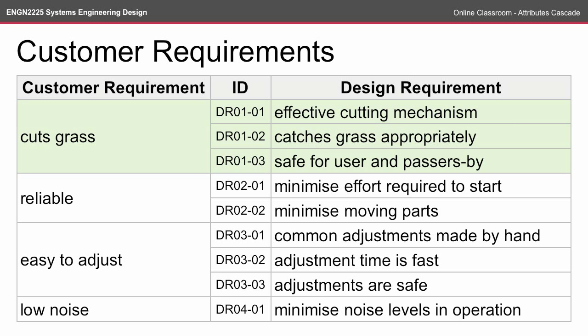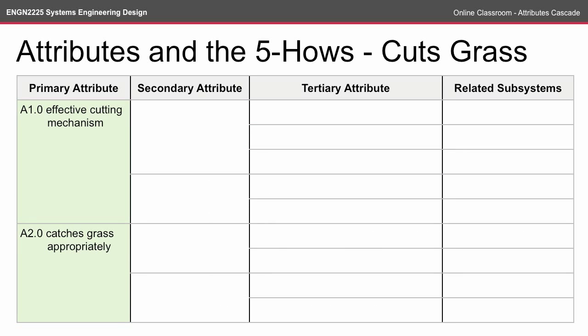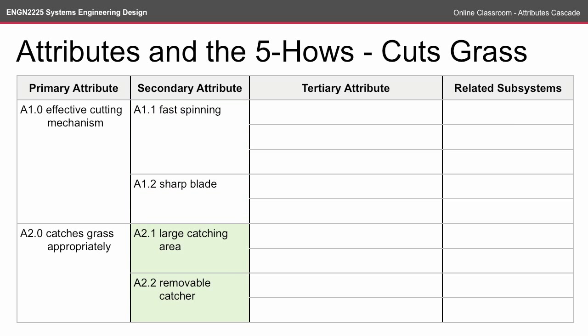For each of the design requirements we're going to break them down into secondary and tertiary attributes. Here we see the first two: effective cutting mechanism and catches grass appropriately. The primary attributes are taken directly from the design requirements, and some of the language might need to be changed slightly. To establish the secondary attribute, ask how you're going to achieve the primary attribute. To achieve effective cutting mechanism, two attributes apply: fast spinning and sharp blade. Likewise for catches grass appropriately: large catching area and removable catcher.